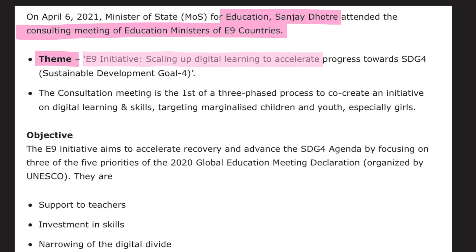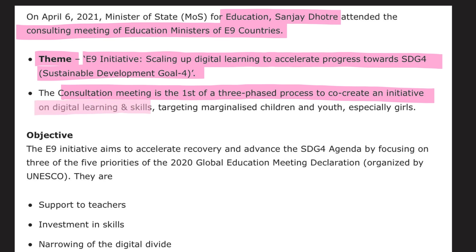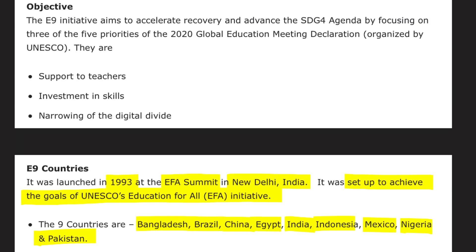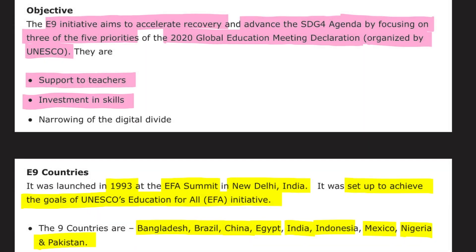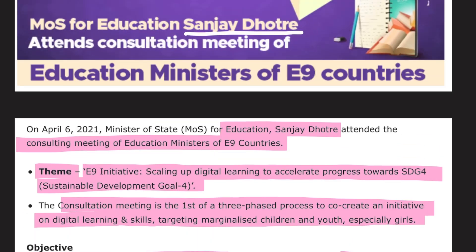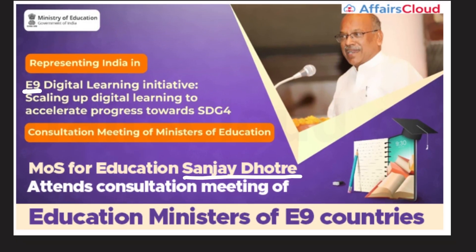On April 6, 2021, Minister of State for Education Sanjay Dhotre attended the consulting meeting of education ministers of E9 countries. The theme was 'E9 Initiative: Scaling Up Digital Learning to Accelerate Progress towards Sustainable Development Goal 4.' The consultation meeting is the first of a three-phase process to co-create an initiative on digital learning and skills targeting marginalized children and youth, especially girls. The E9 initiative aims to accelerate recovery and advance the SDG4 agenda, focusing on teacher support, investment in new skills, and narrowing the digital divide.